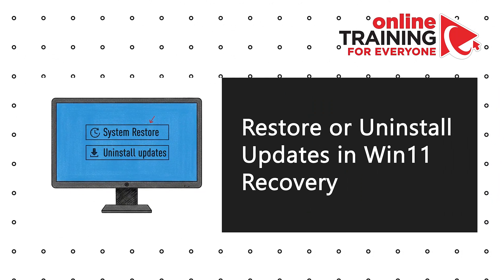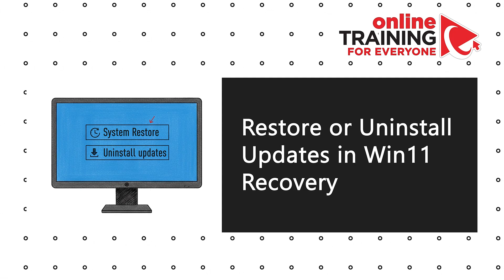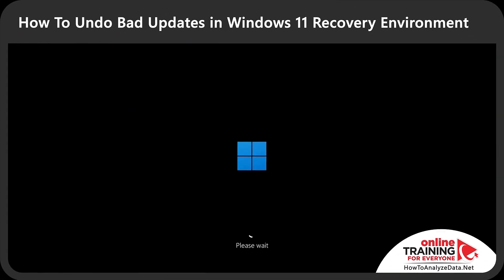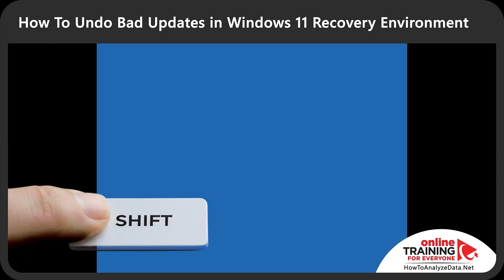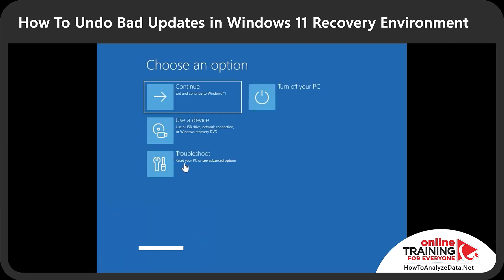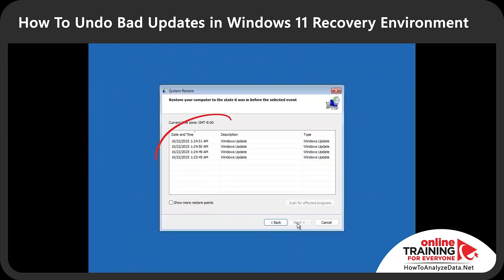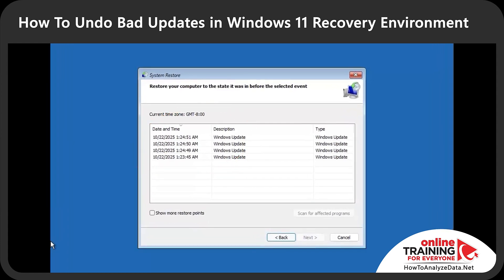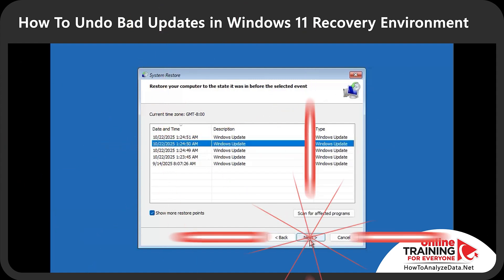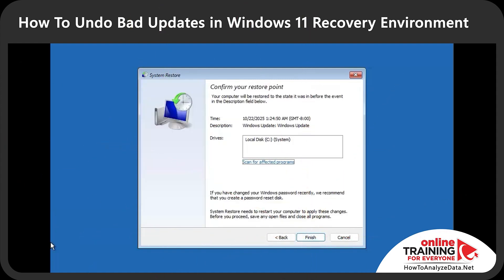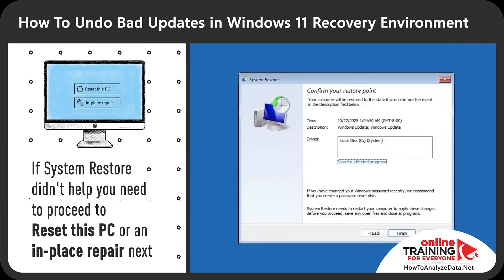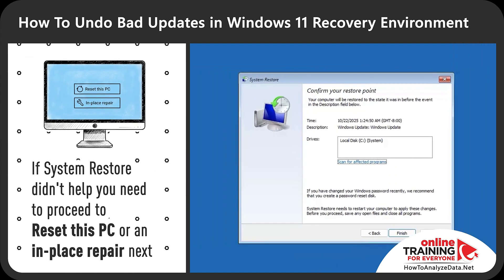We'll use System Restore and the Uninstall Updates feature from the Windows 11 Recovery menu. To get into Windows Recovery mode, hold the Shift button during the boot process. Inside the Windows Recovery Environment, navigate to Troubleshoot, then Advanced Options, and select System Restore. Here you see all restore points created before the Windows update started. There is a checkbox that shows more restore points from previous updates. Select the update causing the issue, click Next, and complete the restore. If System Restore doesn't help, proceed to Reset This PC or use an in-place repair.